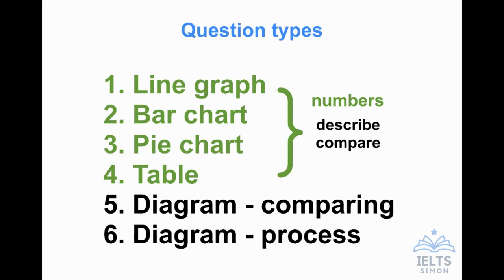And the final thing with numbers is to be able to describe changes or trends. That's where you use your increase, decrease language. Those are the only three things in terms of language that we need to really worry about. Describing numbers, comparing more than one number and describing these changes and trends.